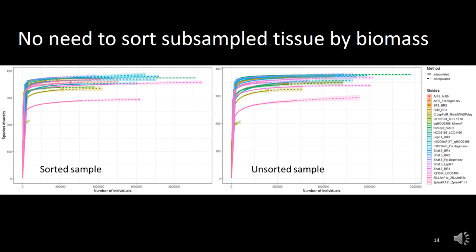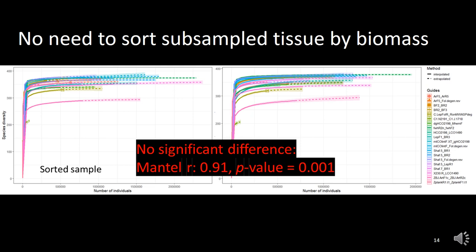In terms of the other challenge — do we need to actually sort the sample tissue or not? You can see the species accumulation curves here for these two experiments, with number of individuals on the x-axis, species diversity on the y-axis, and different colors indicating different primer pairs. At first look, they are pretty similar. And if you run a statistical test on these two different communities, we also find them to be very significantly similar. That tells us we may not necessarily need to sort the subsample tissue by biomass.